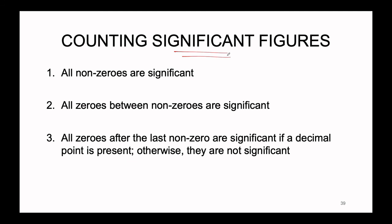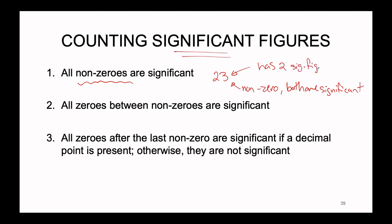There are rules to figure out how many digits are significant, so we know how many digits to include in any answer from these calculations. Rule number one: all non-zero values are significant. In the number 23, both the 2 and the 3 are non-zero values, which means both are significant. The number 23 therefore has two significant figures, or sig figs. That one is really straightforward.